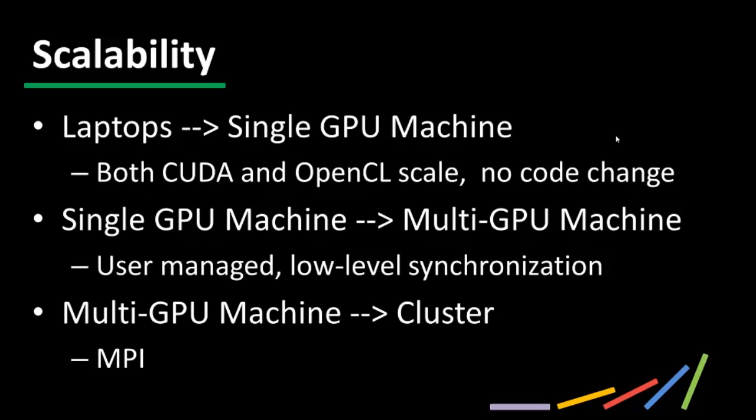From a single GPU machine to a multi-GPU machine, both CUDA and OpenCL require user management code for low-level synchronization and communication between multiple GPUs — a headache, but manageable with patience. From a multi-GPU machine to a cluster, neither CUDA nor OpenCL offers much assistance; programmers tend to write their own MPI code to handle all cluster communication and then use CUDA and OpenCL directly in each node.